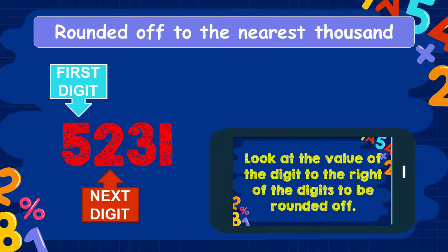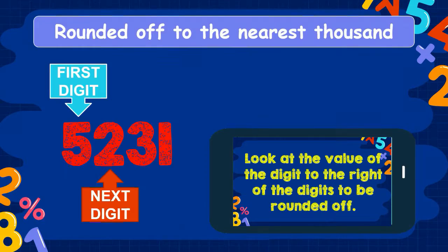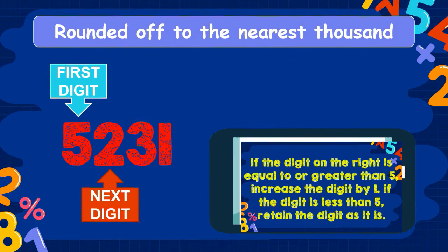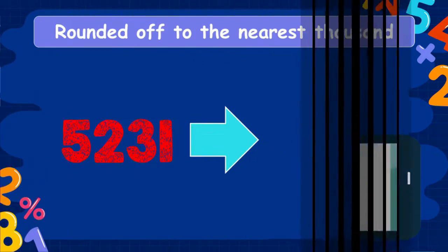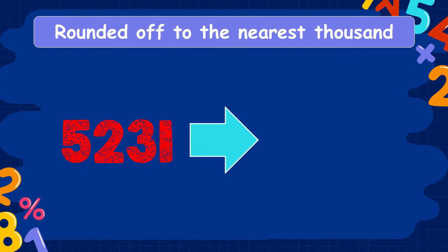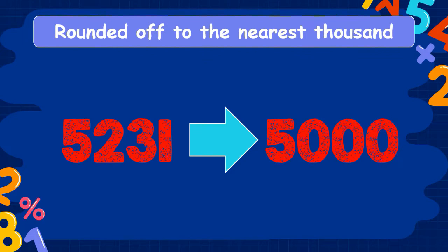Now, we look at the digit to the right of the thousands place. The digit in the thousands place is 5, and the digit to its right is 2. Because 2 is less than 5, we retain the digit as it is. Therefore, 5,231 rounded to the nearest thousand is 5,000.